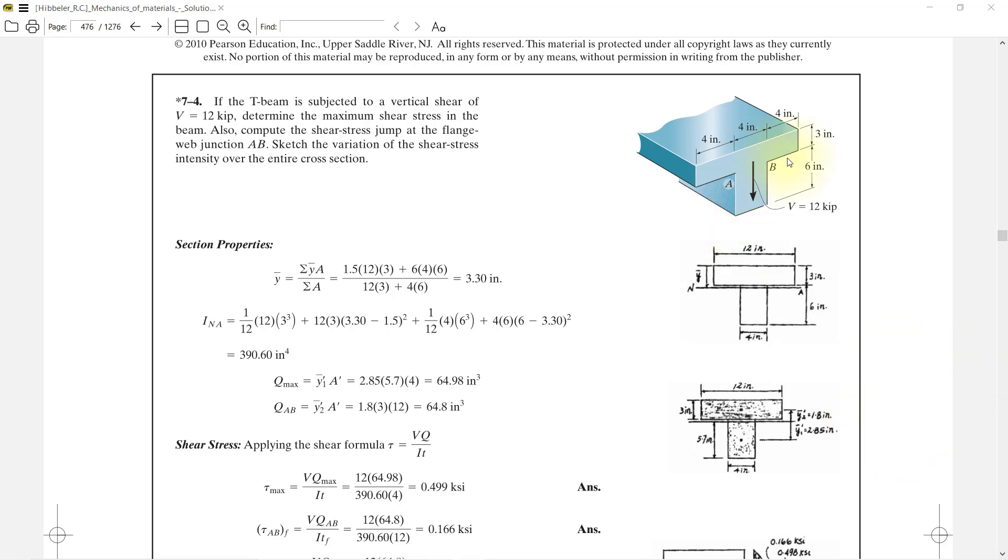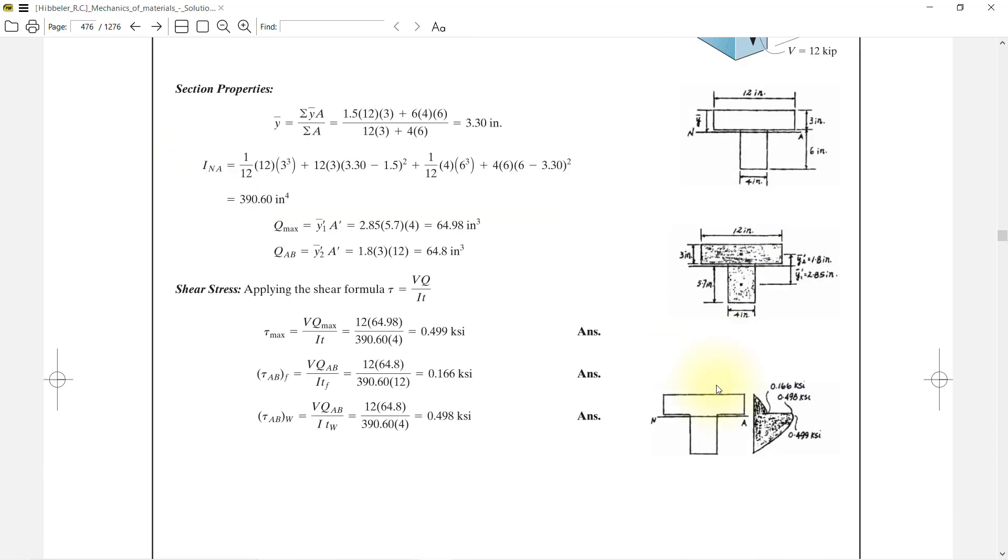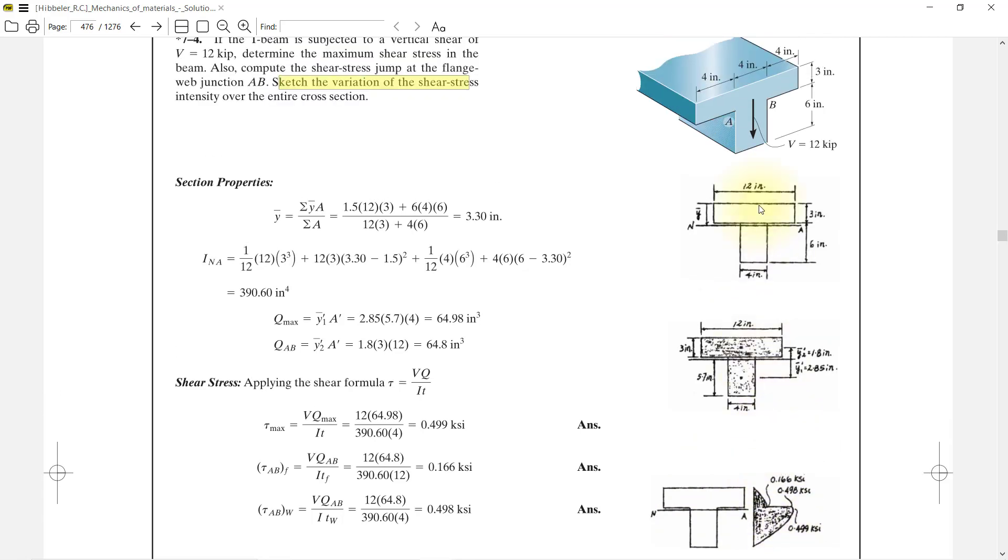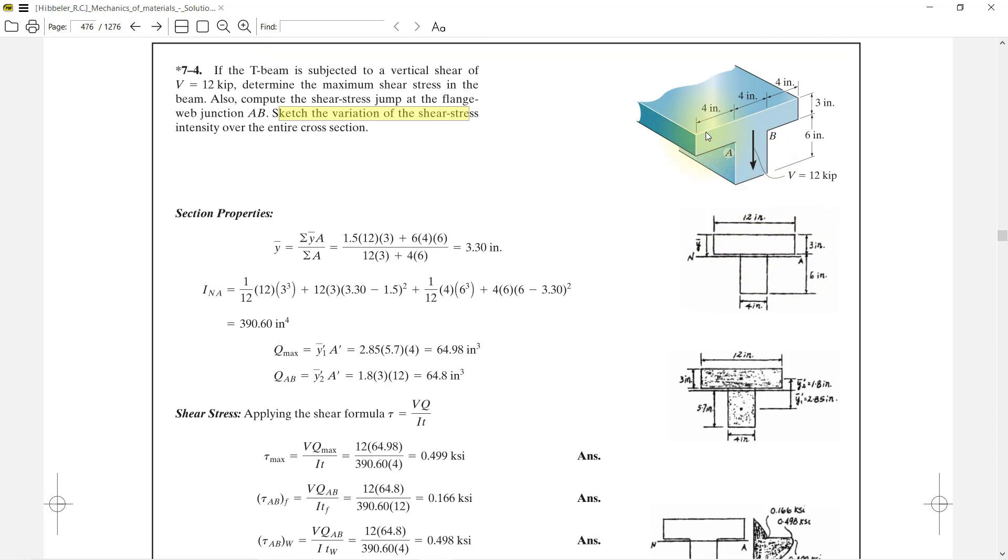Hello, today we will discuss the maximum sketch of variation of shear stress intensity over the entire cross section, and we will plot this graph in Python. So first we will understand the problem. We are given a T-beam.